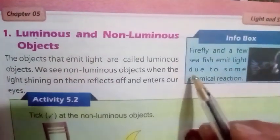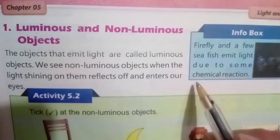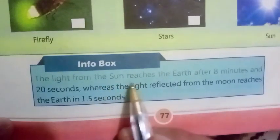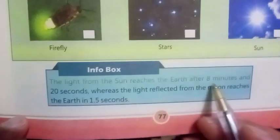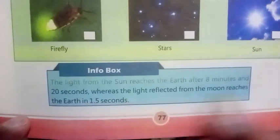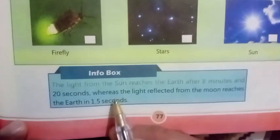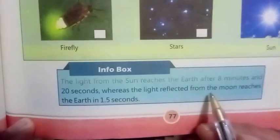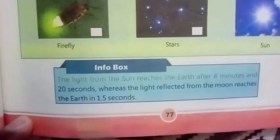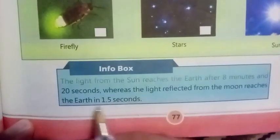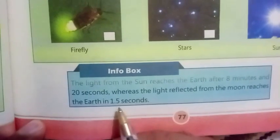Info box: The light from the sun reaches the earth after eight minutes and 20 seconds, whereas the light reflected from the moon reaches the earth in 1.5 seconds.